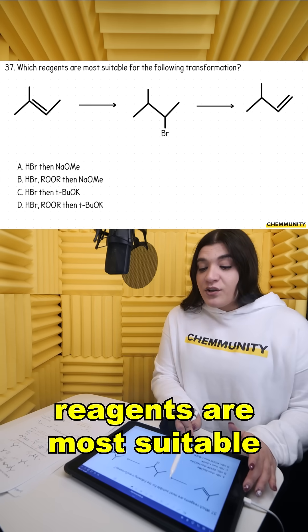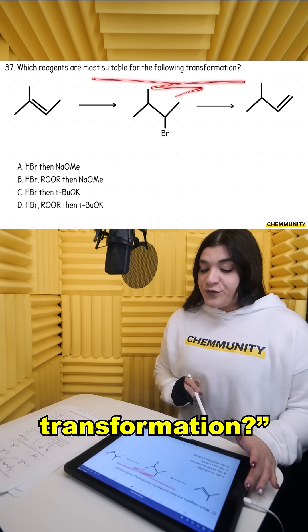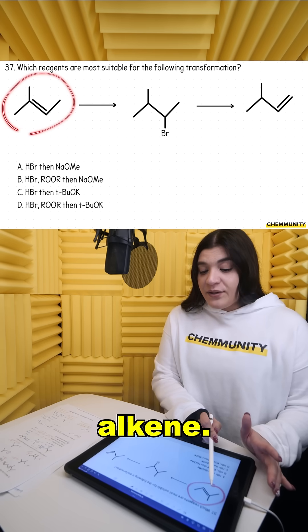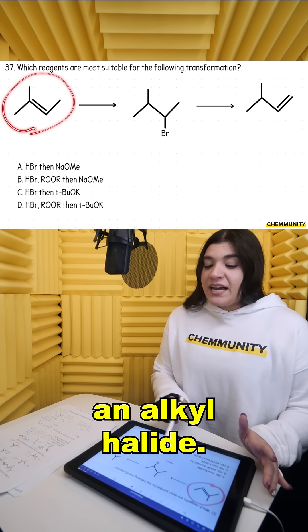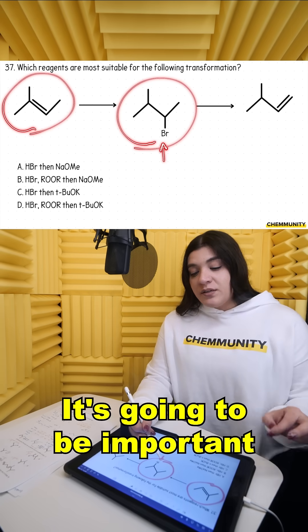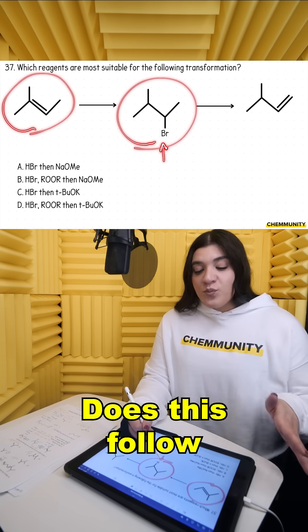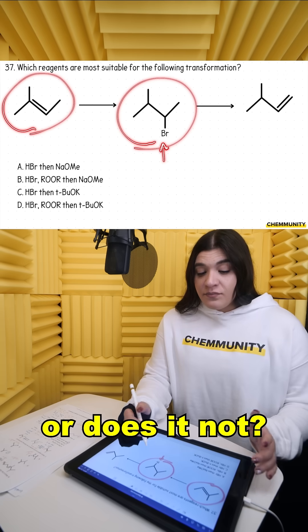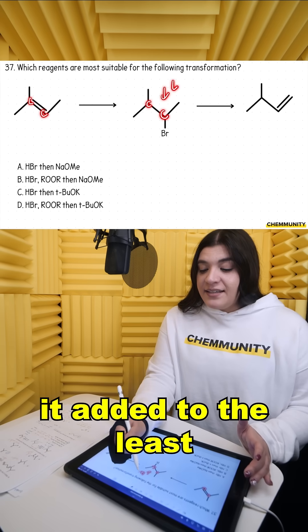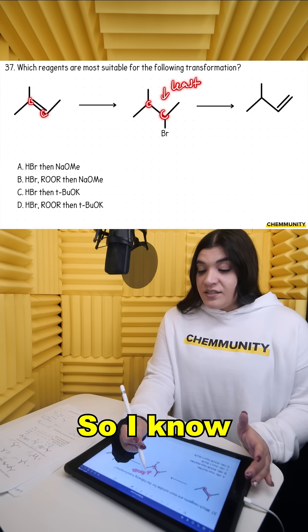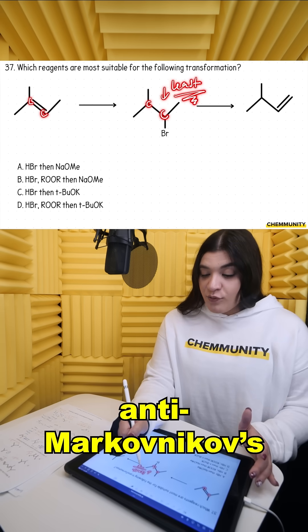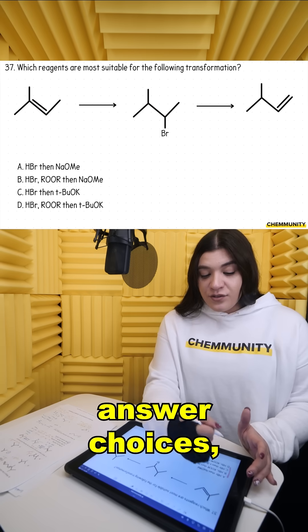Question 37: which reagents are most suitable for the following transformation? We started with an alkene, then we formed an alkyl halide. Where did that bromine add? It's going to be important because we're trying to see, does this follow Markovnikov's rule or does it not? Looking at these carbons, it added to the least substituted position. So I know that the first reagent has to follow anti-Markovnikov's rule.